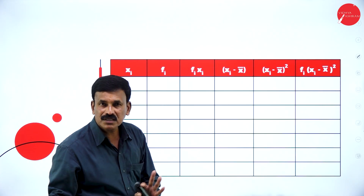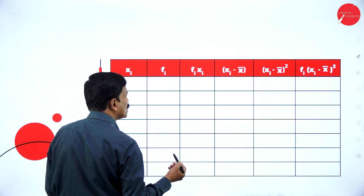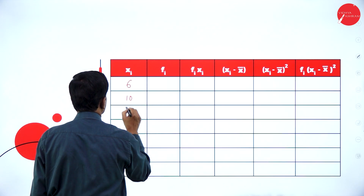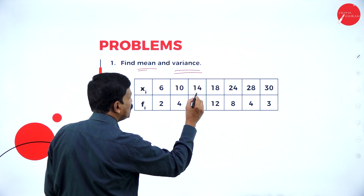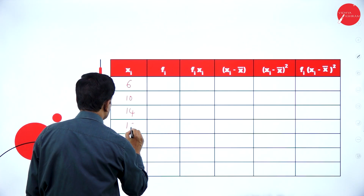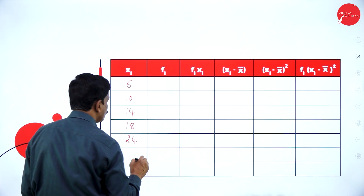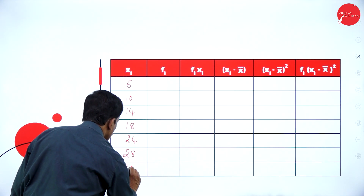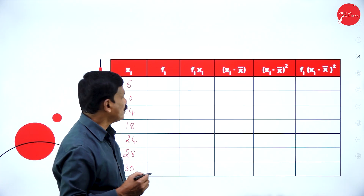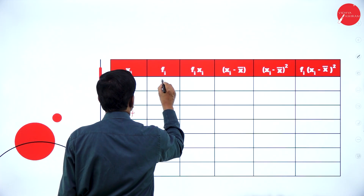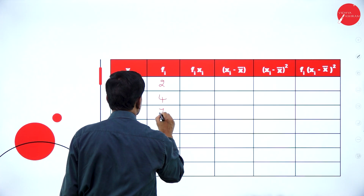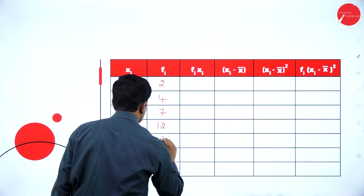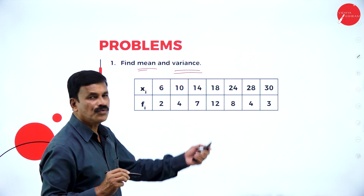What is xi? 6, 10, 14, then 18, 24, 28, and 30. What is fi? fi is 2, 4, 7, then 12, 8, and the last two: 4 and 3.